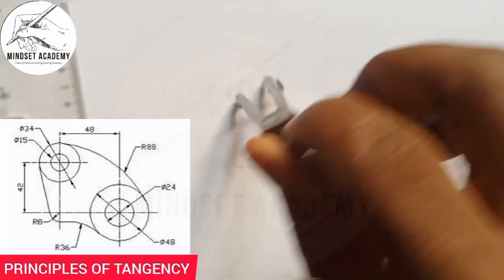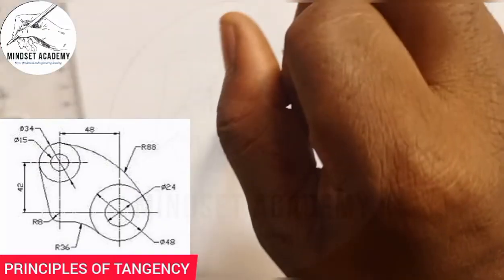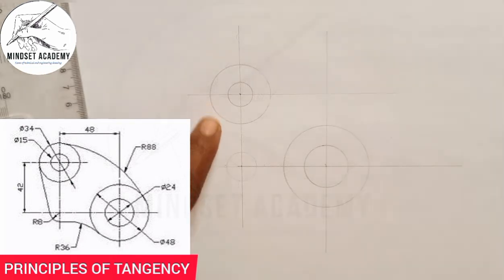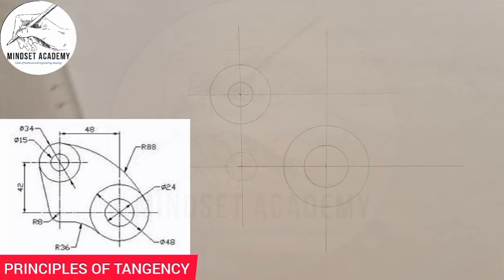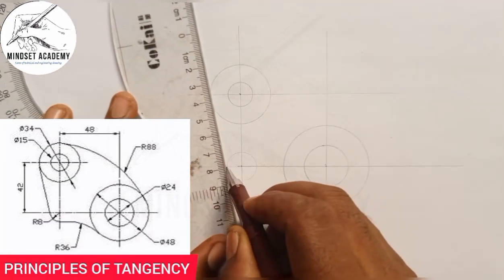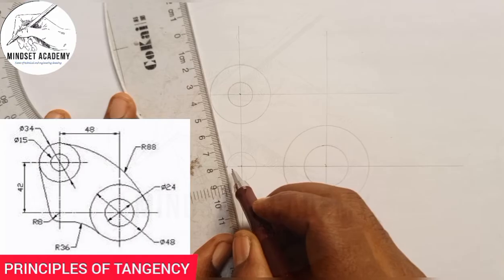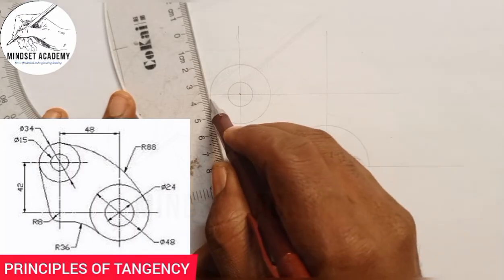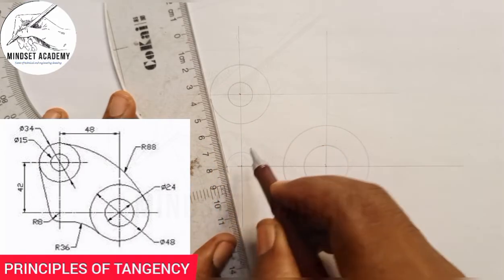Now there is a straight line joining these two circles that is tangent to both. I will draw a straight line to join those two points, making sure they are tangential in the correct manner.